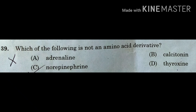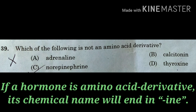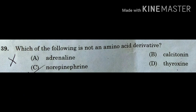Next question: which of the following is NOT an amino acid derivative? Option A: adrenaline; Option B: calcitonin; Option C: norepinephrine; Option D: thyroxine. A trick: if a hormone is an amino acid derivative, its chemical name will end in '-ine.' Adrenaline (epinephrine), norepinephrine (noradrenaline), and thyroxine are all derived from amino acids with some modification.